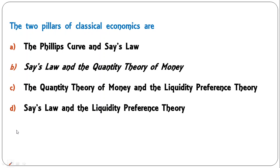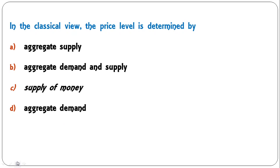Next question: the two pillars of classical economics are the Phillips curve, Say's Law, Say's Law and quantity theory of money, quantity theory of money and liquidity preference, or Say's Law and liquidity preference? The correct answer is B — Say's Law and the quantity theory of money are the two main pillars of classical economics.